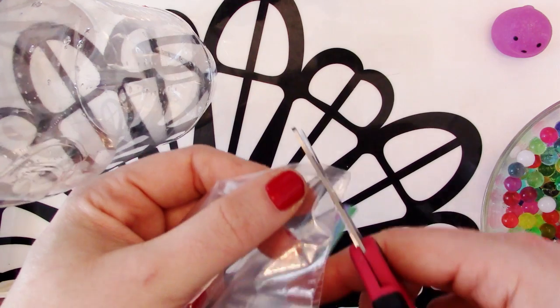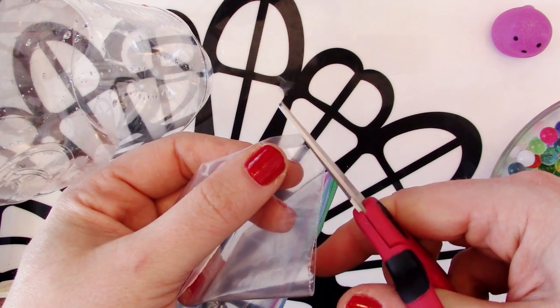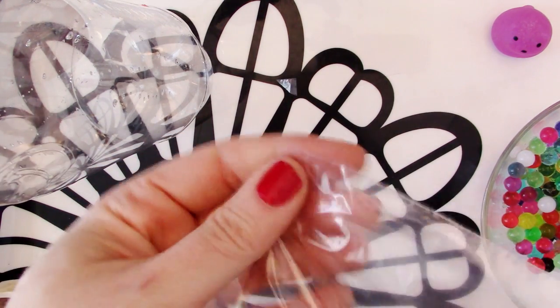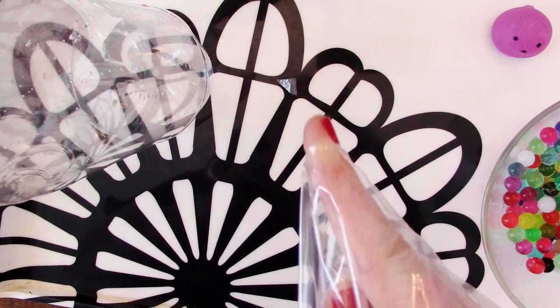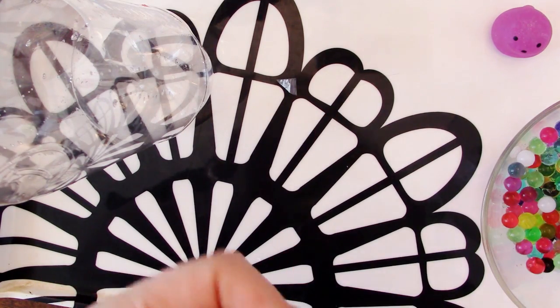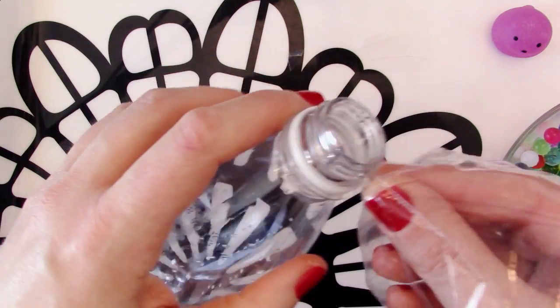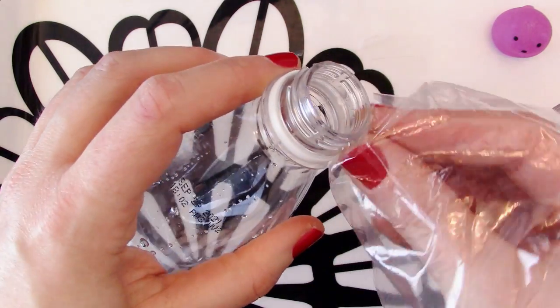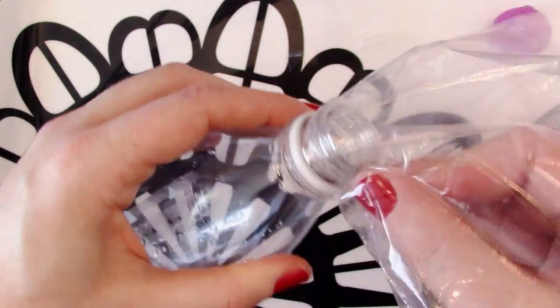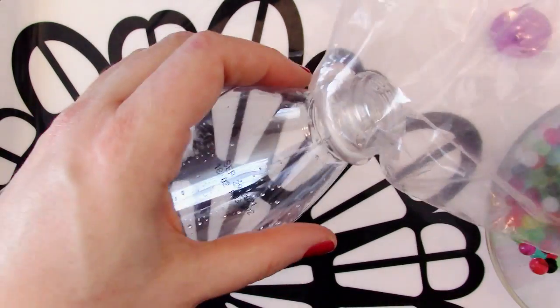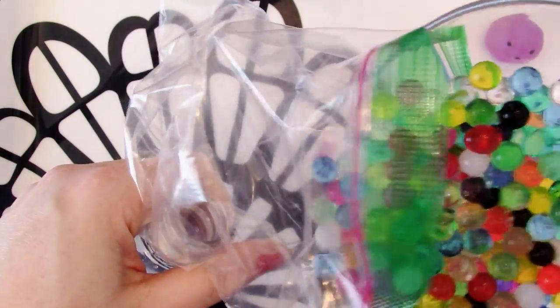So you just need to snip off a corner of the bag, and make sure that it's not too big, but that it will be big enough to wrap around the opening of the bottle. Then you need to kind of carefully stretch it around the outside of the bottle.